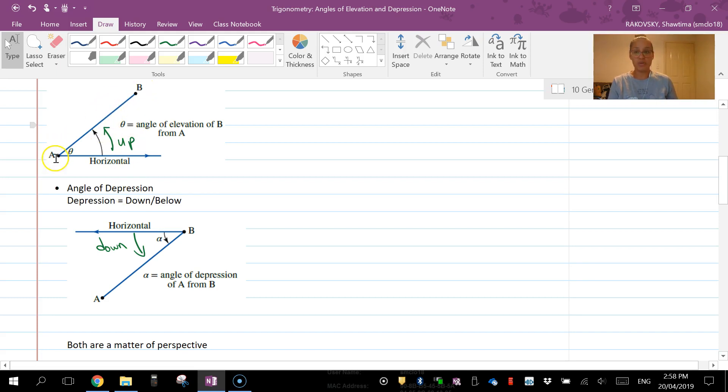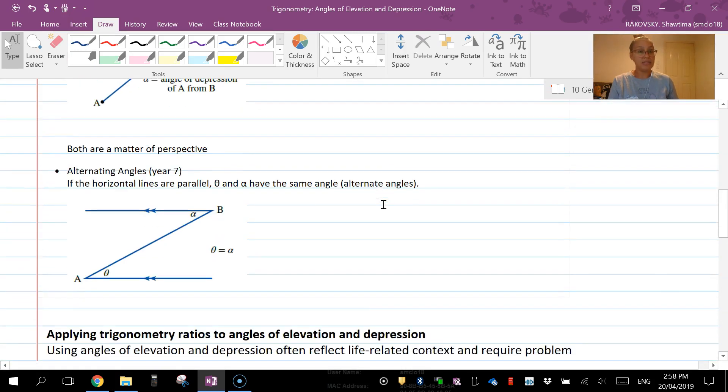Remember that these are both a matter of perspective, so read the questions carefully because you have two points here, but if you're getting an angle of elevation from point B then it's going to be above B, not below B.